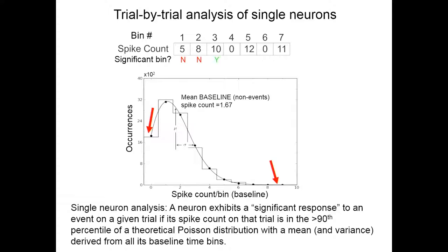We march through bin by bin and ask whether each bin's spike count is in the 90th percentile of the Poisson distribution whose mean and variance come from the baseline period — essentially whether each bin is significantly different from baseline. So we're analyzing trials versus these significant responses. As we'll see later, this has become incredibly informative for learning about the anterior cingulate.